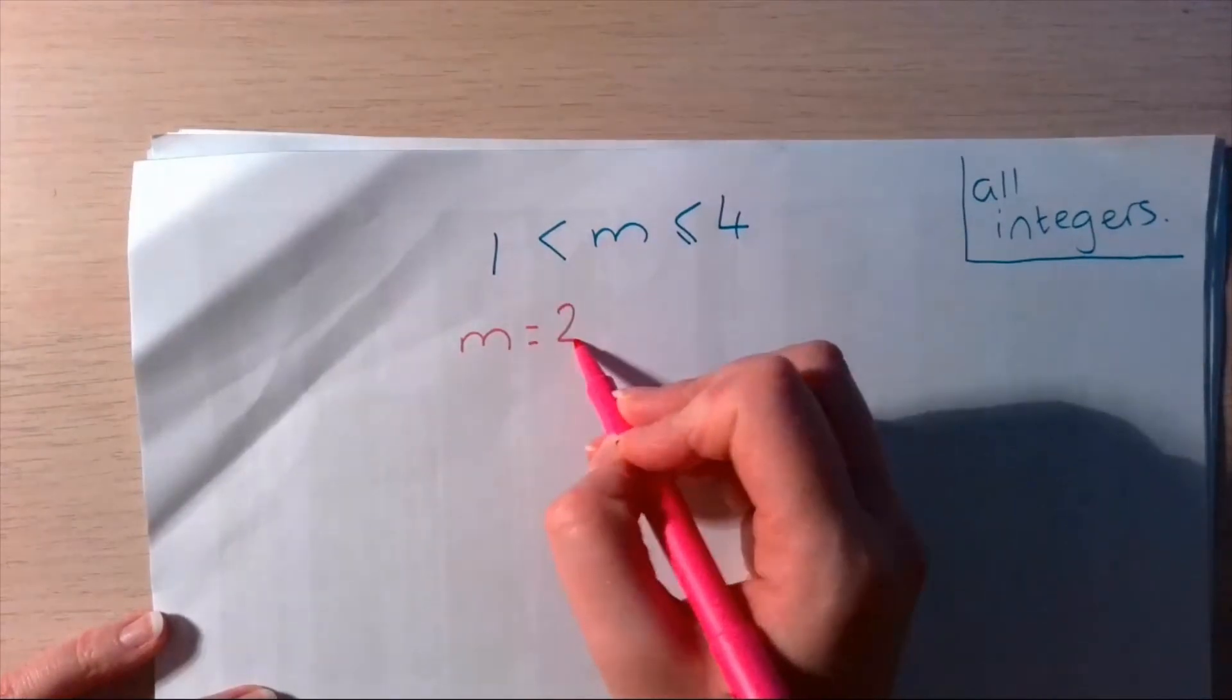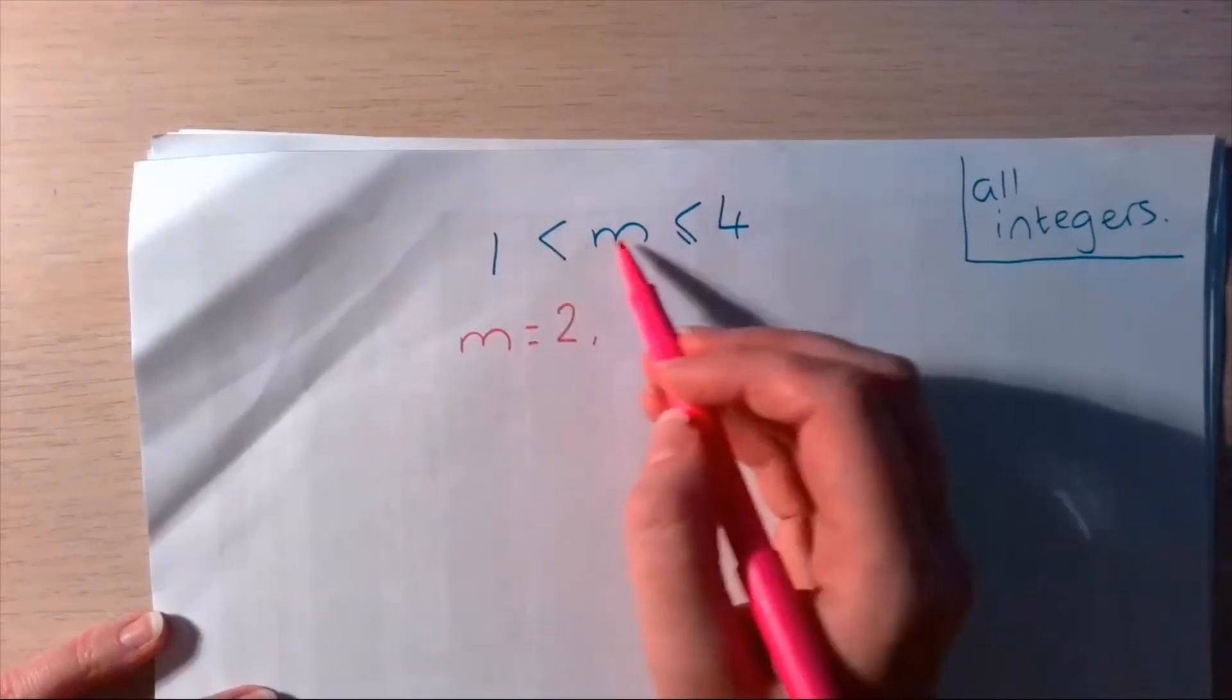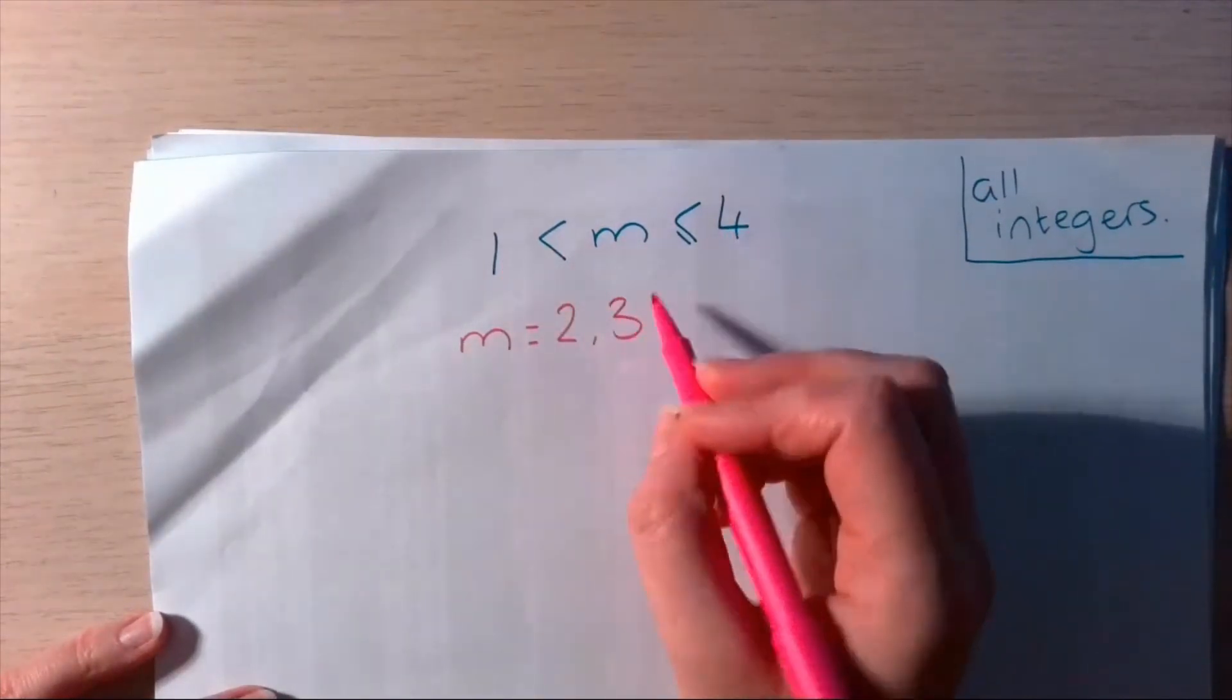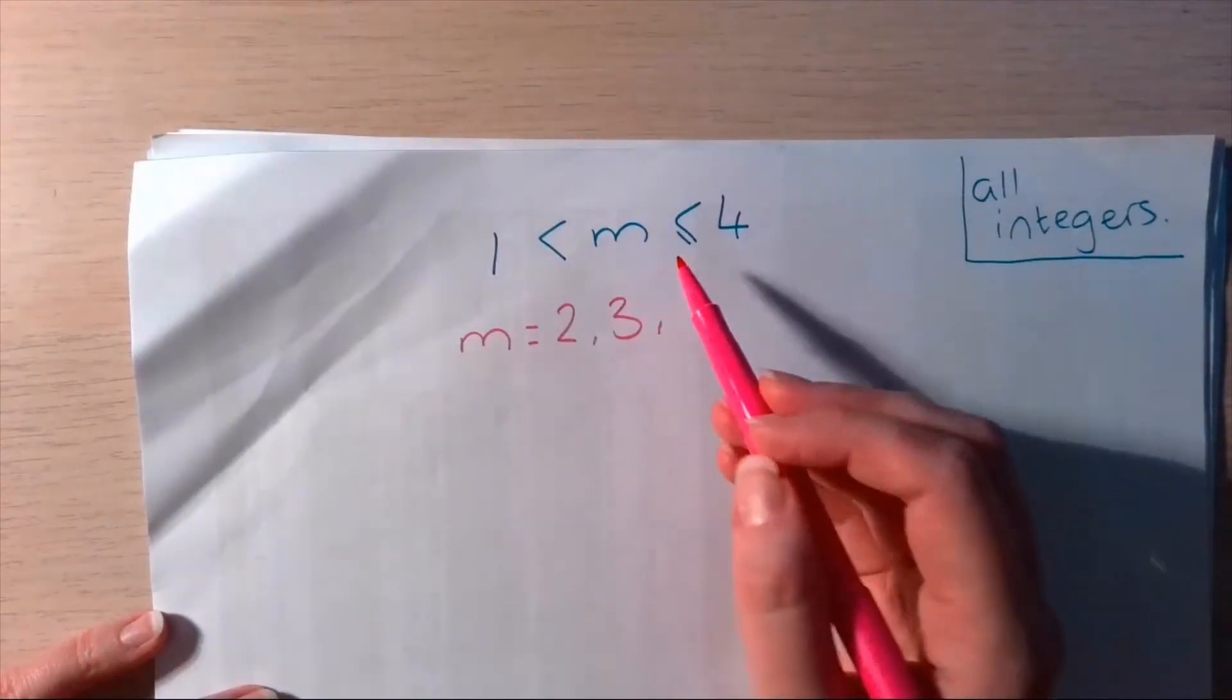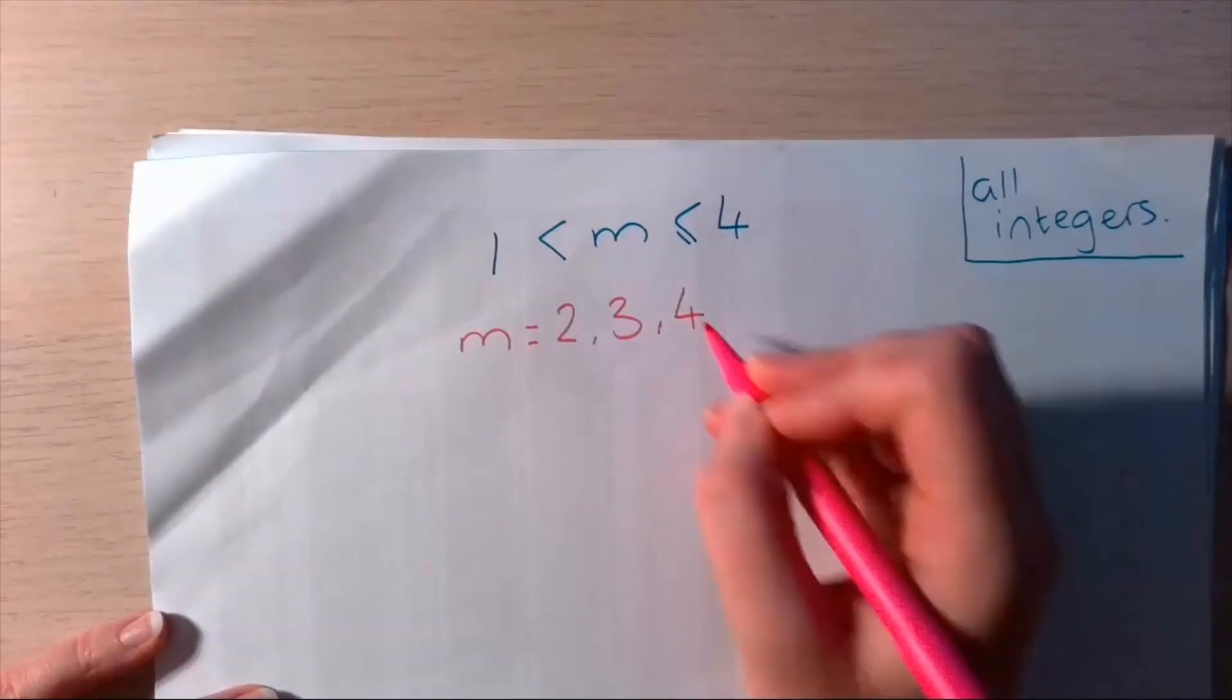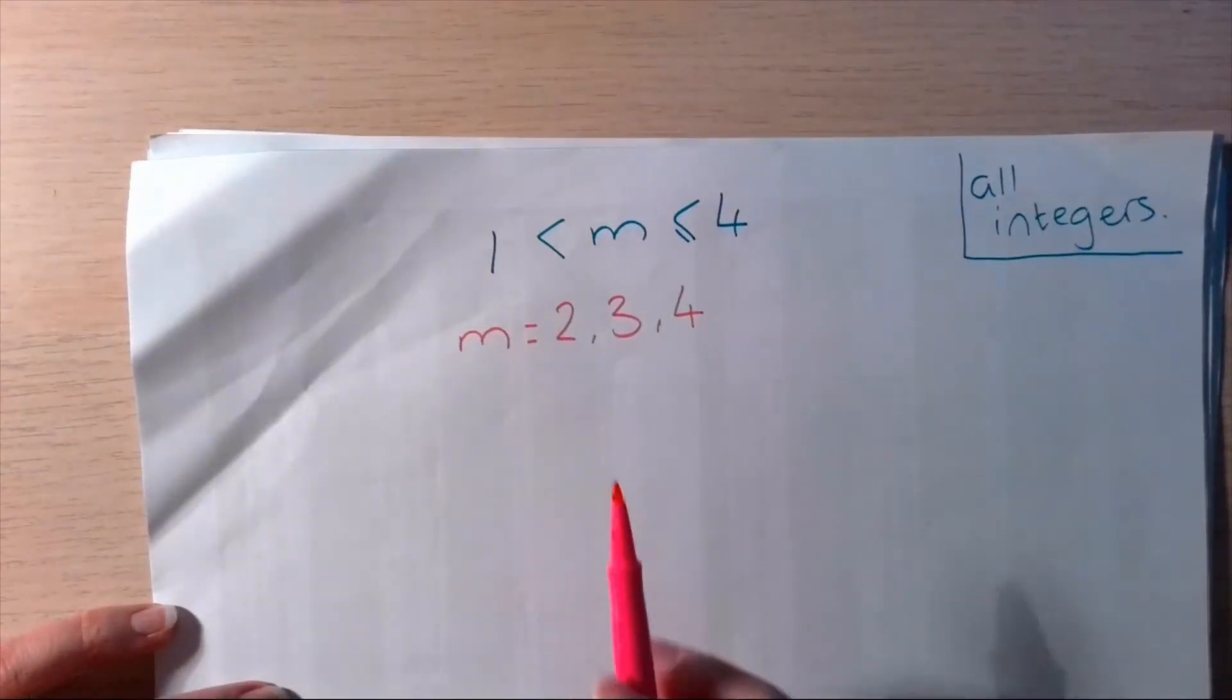So, it could be 2. It could be 3. 3 is between 1 and 4. And, because of this equal sign here, less than or equal sign, it could also be 4. There are all my options that m could possibly be.